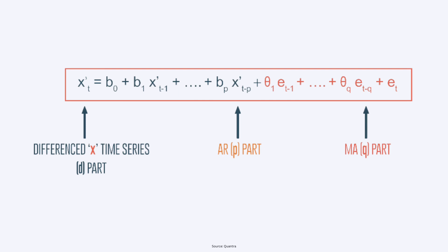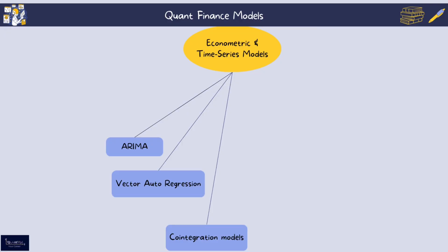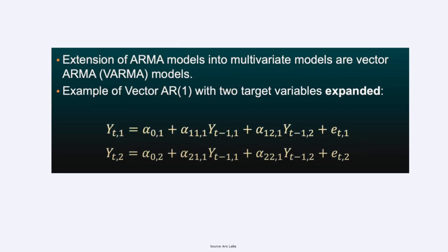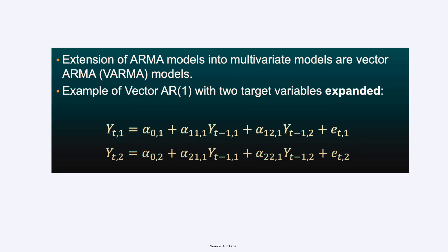Another common model is the Vector Auto Regression (VAR) model — a multivariate time series model that captures the linear interdependencies among multiple time series. Each variable in the system is modeled as a function of its own lagged values and the lagged values of other variables.